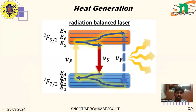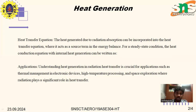A simple schematic diagram explains the radiation balance relations. Here, E represents emission values, and additional factors account for radiation absorption and the volume of radiation. These factors are required for heat generation and absorption, and can be incorporated into the heat transfer equation, where they act as source terms in the energy balance for a steady-state condition.